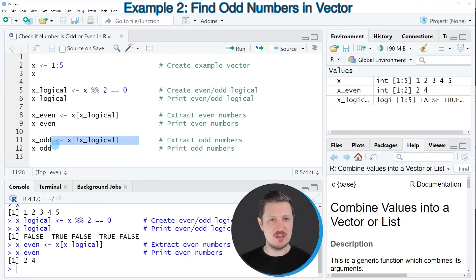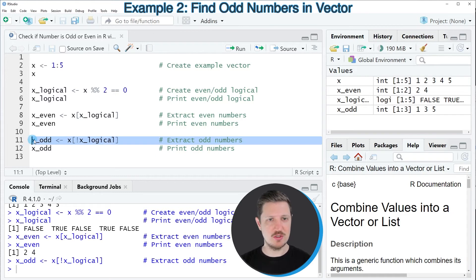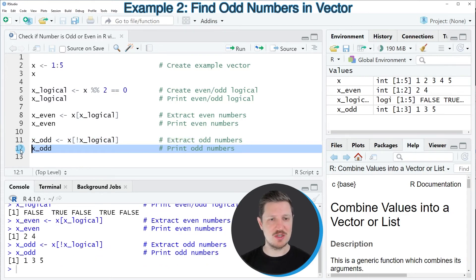I'm creating another data object which contains the odd numbers. After running line 11, a new data object called x_odd is created. We can print this data object to the RStudio console, and you can see that we have created a new vector containing only the odd numbers of our input vector.